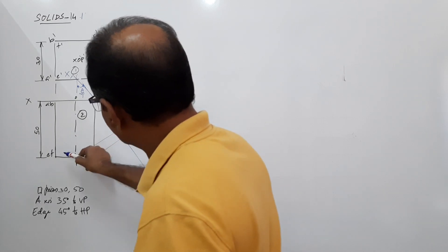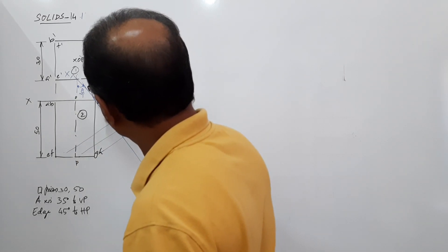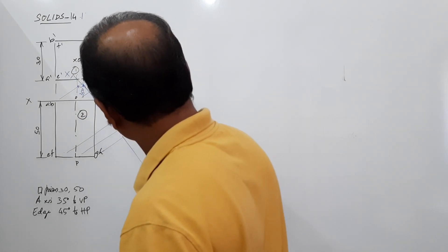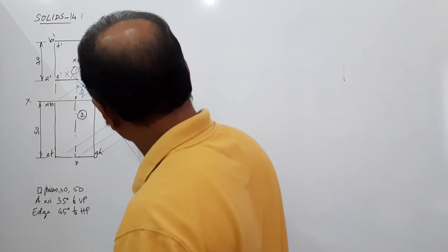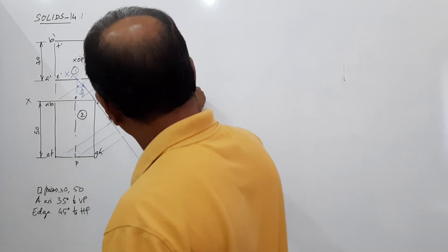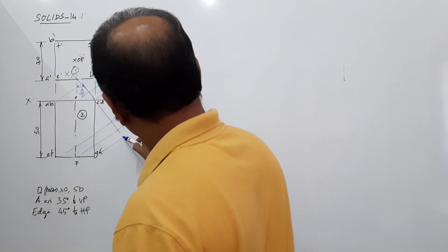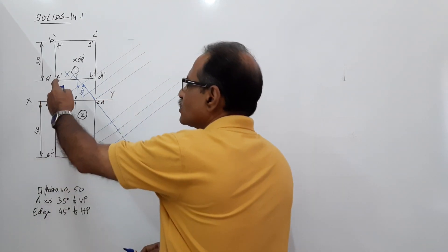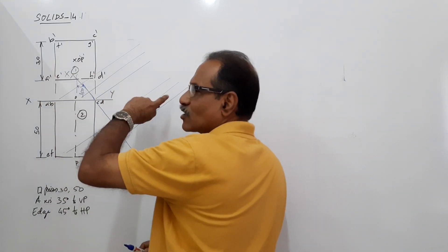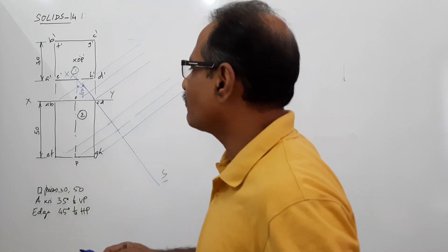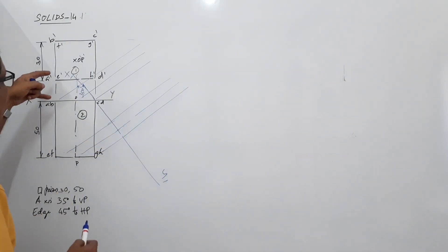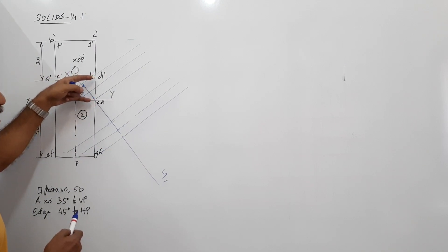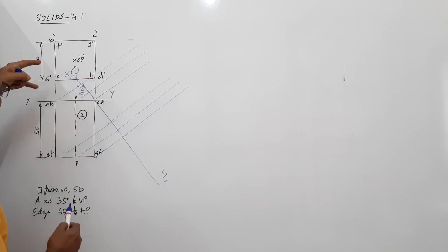You have to be extremely careful in doing that — project lines perpendicular to X1Y1. Take the distance of the previous elevation from XY and mark on the respective projector to get the new elevation. Points A dash, E dash, H dash, D dash — mark them this much away from XY.